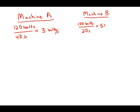100 divided by 20, that is 5 bolts per second. That's how fast machine B is working.